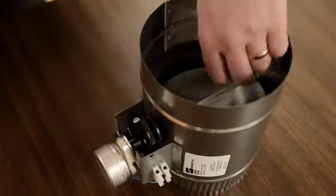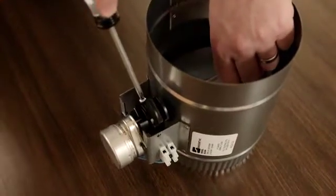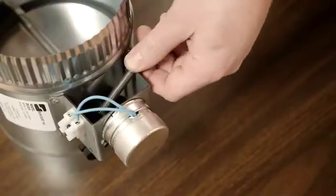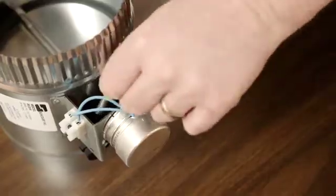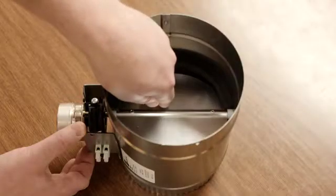For this second configuration, begin by removing the screw from the outer coupler arms and remove the spring. Adjust the damper in the desired position for minimum air flow.